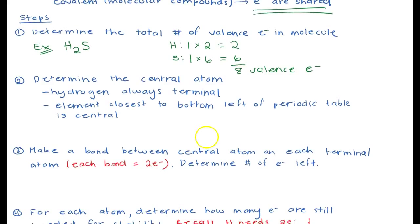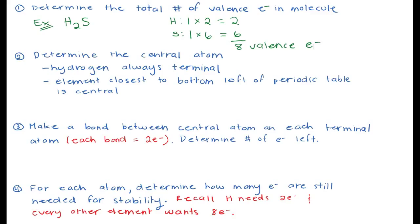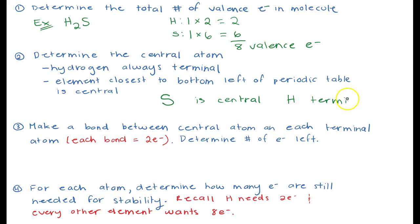The next thing we need to do is determine the central atom. The central atom is always the one that is most to the bottom and to the left in the periodic table. One important thing to keep in mind is that hydrogens are always going to be terminal — they'll never be the central atom. So since we only have sulfur and hydrogen, sulfur is going to be our central atom, and the hydrogens are all terminal.